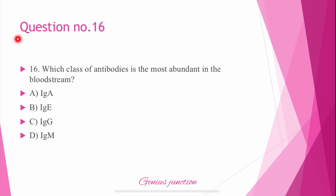Question number 16: Which class of antibodies is the most abundant in the bloodstream? The right answer is C.